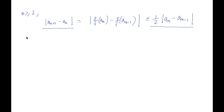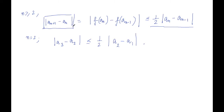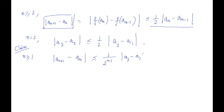In this relation, if we put n = 2, we get |a₃ - a₂| ≤ (1/2)|a₂ - a₁|. We know the value of a₁, and using this recursive relation we can bring |aₙ₊₁ - aₙ| to have some relation with |a₂ - a₁|. So I claim that for n ≥ 1, |aₙ₊₁ - aₙ| ≤ (1/2)^(n-1) · |a₂ - a₁|. This can be guessed using a recursive approach.